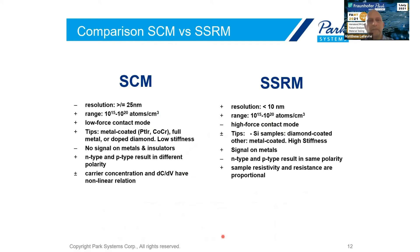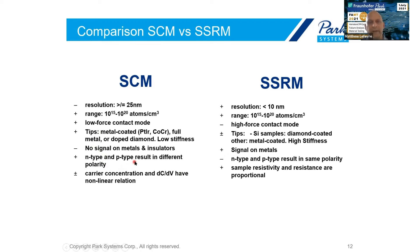Just a brief comparison between the two. The big advantage of SSRM is resolution. A typical resolution for SCM is 25 nanometers or greater — we actually get a higher signal the older the tip is because we have a larger depletion zone. SSRM is typically less than 10 nanometers. The range of doping concentrations we can measure are approximately the same. Tips are definitely a difference: for SCM we're using either full metal or metal-coated tips with low stiffness cantilevers, whereas in SSRM, since we need such high force, we're basically limited to doped diamond tips. Another advantage of SSRM is that we actually get signal on metals as well as semiconductors. The advantage of SCM is that with the phase, we get information on both doping type as well as amplitude.